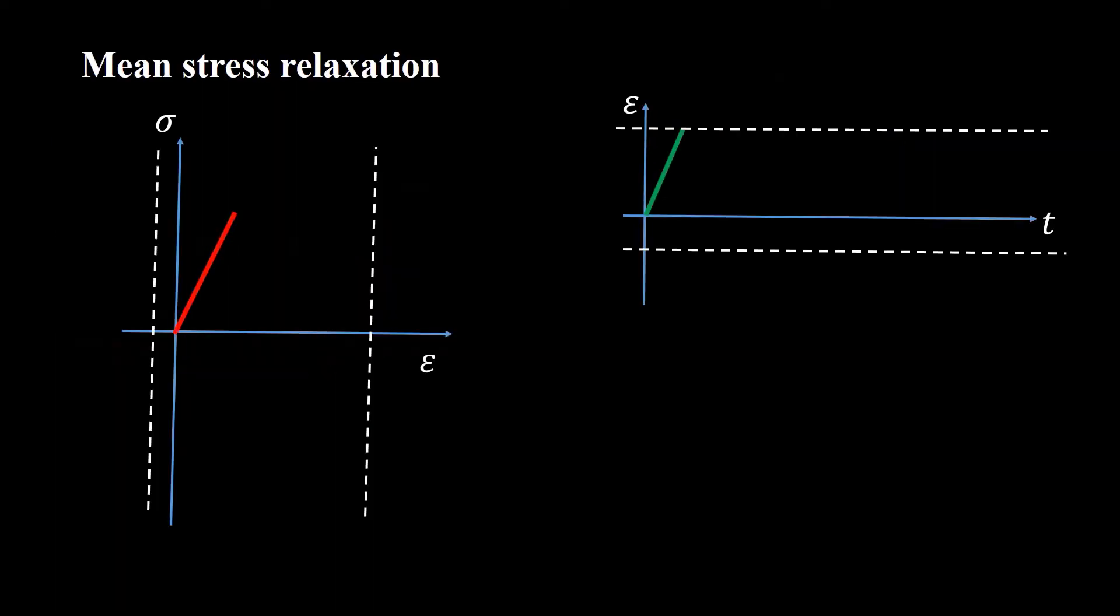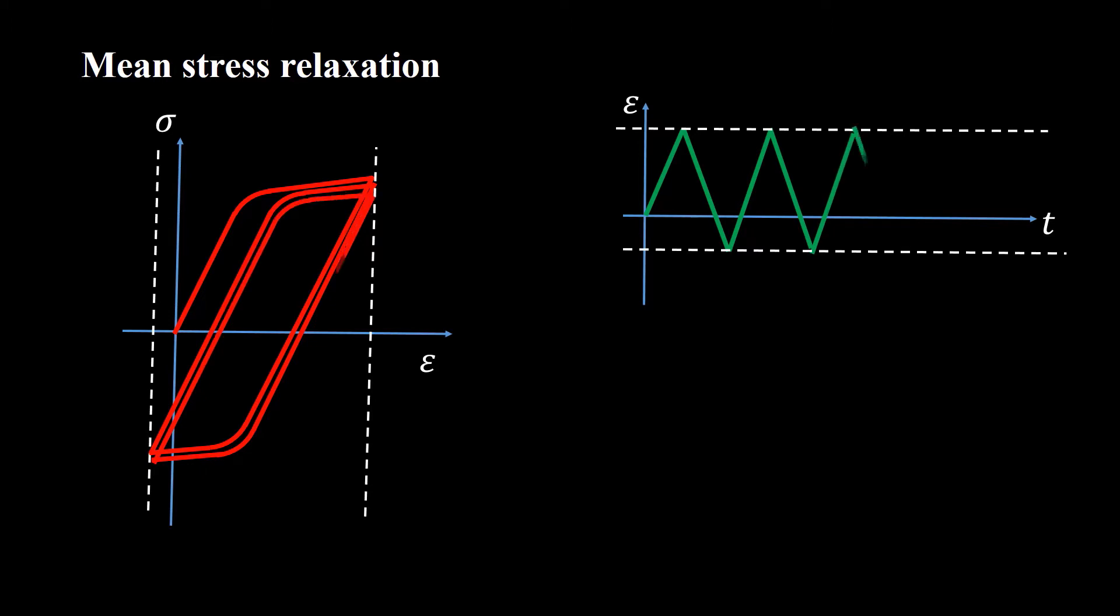When asymmetrical strain-controlled cyclic loading is applied to the material, at each cycle the average of the applied stress is reduced. This phenomenon is known as mean stress relaxation.